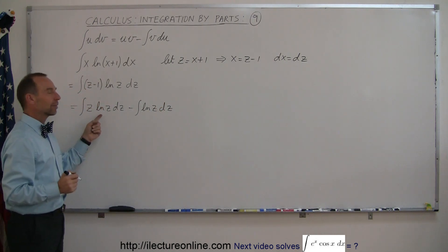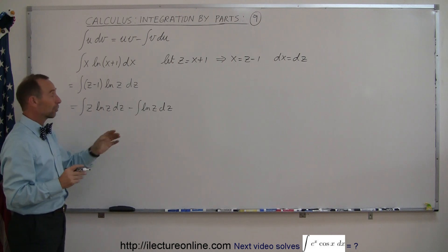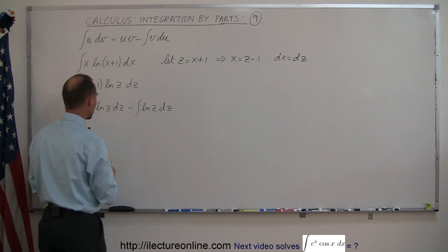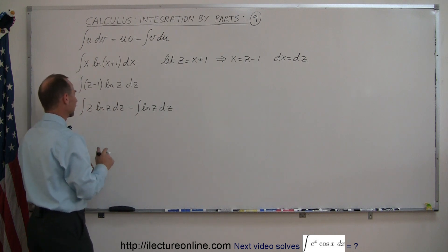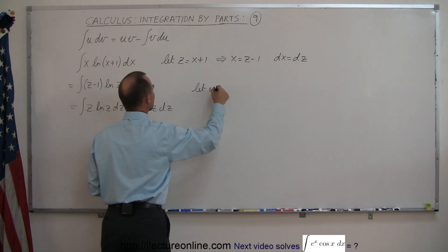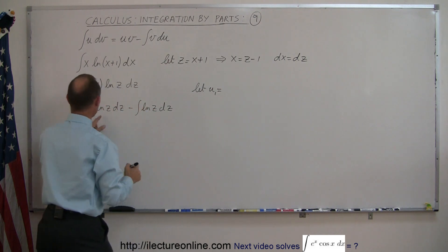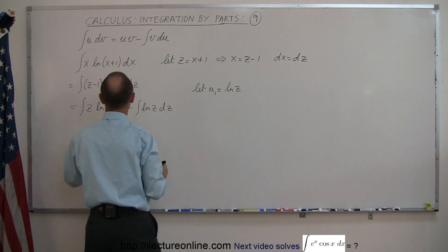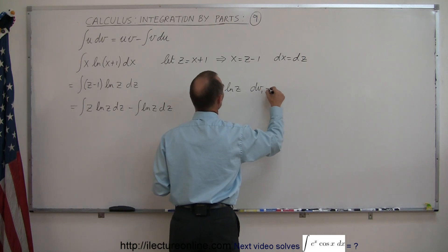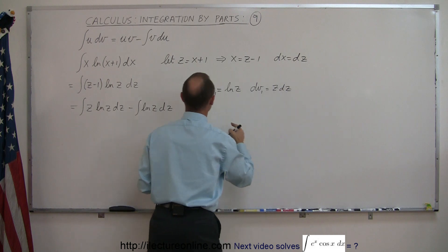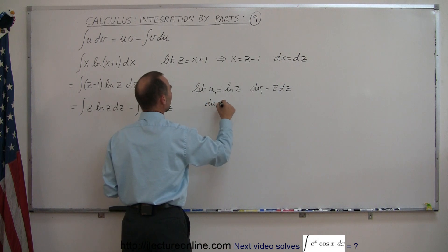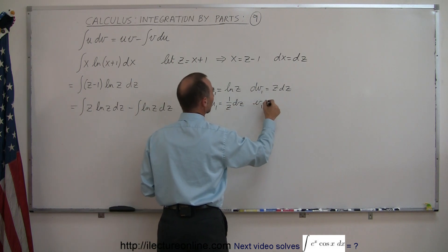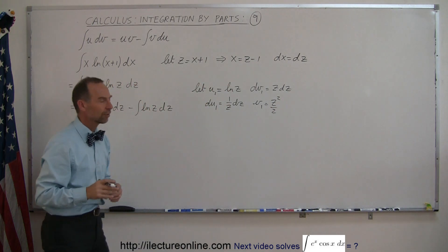We know how to integrate both of those, so we'll do them separately. For the first integral, let u1 equal the natural log of z, and dv1 equal z dz. Then du1 equals 1 over z dz, and v1 equals z squared over 2.